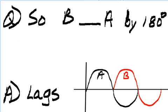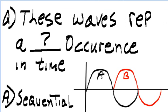So B blank A by 180 degrees. Answer: lags. B lags A by 180 degrees. These waves represent a blank occurrence in time. Answer: sequential occurrence in time.